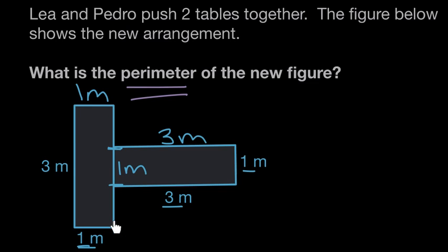This length and this length are part of the outside, and we need to know how long those are. So what we can say is, if this entire length is three meters, then this entire length is three meters. But one of those meters was moved to the inside, so how many meters are still left here on the outside?